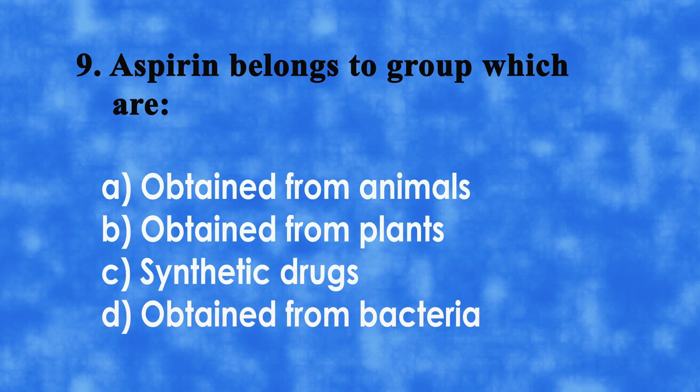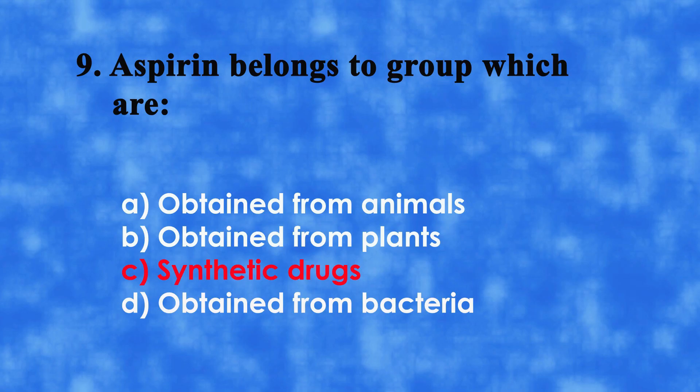No. 9: Aspirin belongs to the group which are A. Obtained from animals, B. Obtained from plants, C. Synthetic drugs, or D. Obtained from bacteria. The correct answer is C. Synthetic drugs.